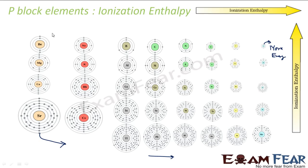But if you go down a group, it is less energy required. Why? Because the size is more and the electron is less in control with the nucleus. So it is all about the control. Fluorine, for example, has more control over its electrons because fluorine is more charged and smaller, so all the electrons are in more control.